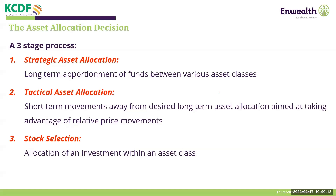There are three stages of the asset allocation process. First, strategic asset allocation — long-term apportionment of funds between various asset classes. Second, tactical asset allocation — short-term movements away from the desired long-term asset allocation. Third, the security selection or stock selection itself.